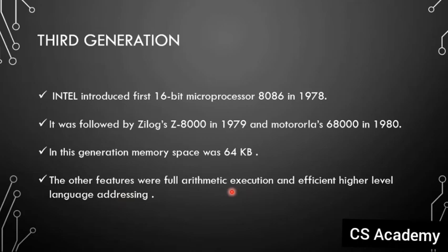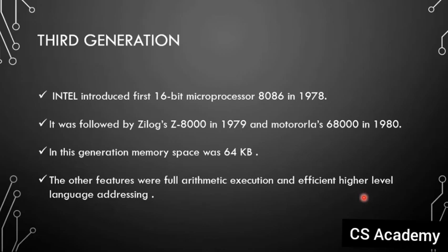In the second generation the goal was to build a complete microprocessor system with ROM, CPU, and RAM. In the third generation, the key feature is full arithmetic execution and efficient higher-level language addressing. This generation's microprocessor was capable of executing full arithmetic equations and efficient higher-level language addressing.